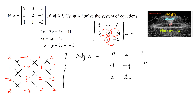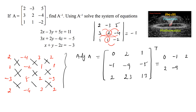Also, (4 + 9) = 13. The cofactor matrix's transpose gives the adjoint. Transforming rows to columns, the adjoint matrix is: [0, -1, 2; 2, -9, 23; 1, -5, 13].